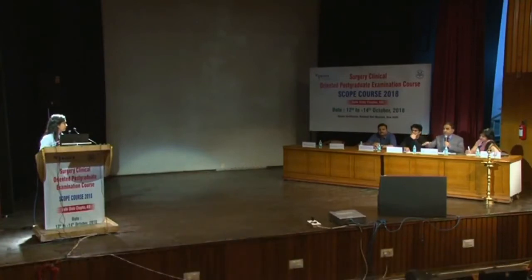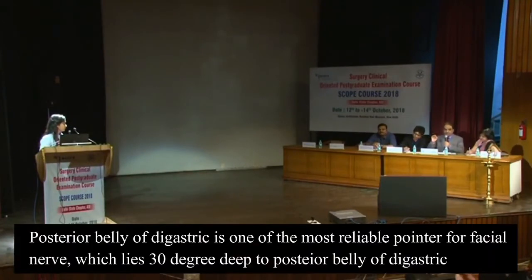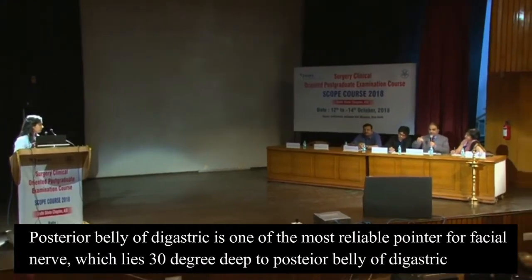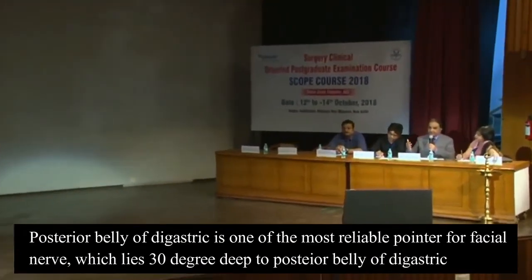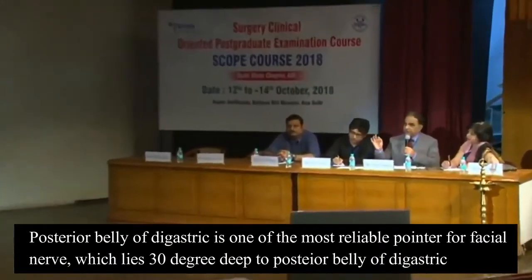That is why it is called the facial venous plane of Patey, and we stick to that plane. Posterior belly of digastric — deep to that and at 30 degrees is where you find the facial nerve. This is the most reliable landmark. Most of the time, the tragal pointer is found after we have already found the nerve.